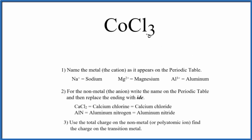To write the name for CoCl3, we can see we have a metal and then these non-metals here. So we have a metal and non-metals. This is an ionic compound.